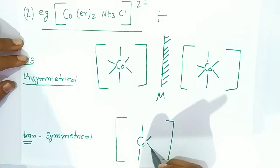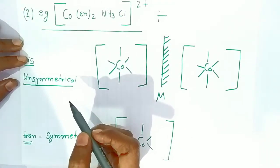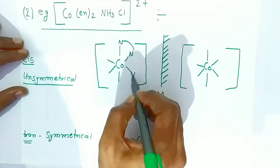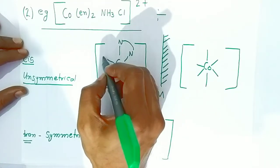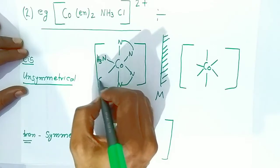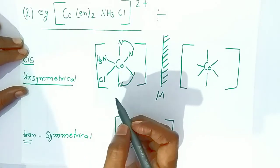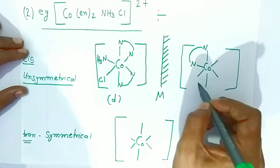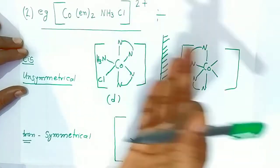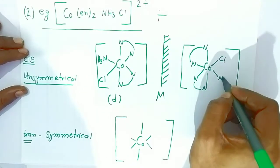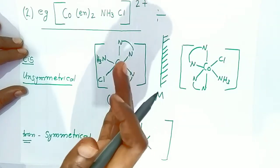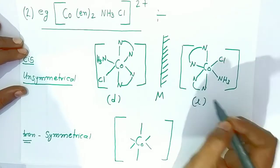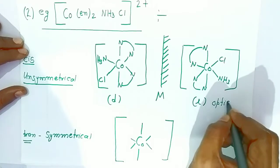Cobalt is at the center for both. For the cis structure: one ethylene diamine here, second ethylene diamine here, and the ammonia nitrogen donates its lone pair, as does the chloride to cobalt. This is the first dextrorotatory isomer. Its mirror image shows the ethylene diamine on the other side - this is a non-superimposable mirror image. One rotates light to the right (dextro), the other rotates it to the left (levo), so they are optically active isomers.